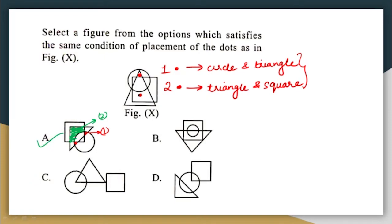For our understanding, let us see why the other options are wrong. In option C, I can place the first dot within the circle and triangle alone, but to place the second dot I need a region within the triangle and square alone — there is no such region because the triangle and square do not have any common region. So I am unable to place the second dot in option C, making it wrong. Similarly, option D also has no intersection between the triangle and square, so I cannot place the second dot there either.